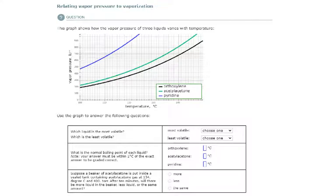So here, we're going to relate vapor pressure to vaporization. We're going to use this graph to answer a few questions. So the first question, it says, which liquid is the most volatile and which is the least volatile?